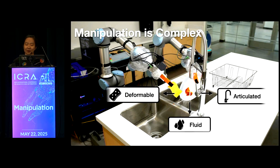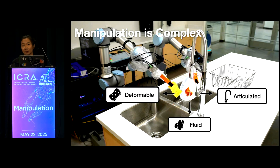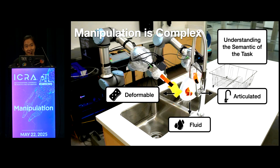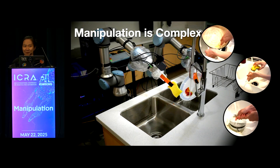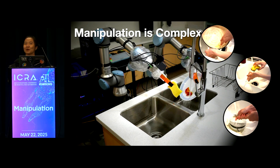I always like to use this example to highlight the complexities of manipulation — for example, the need for the robot to interact with so many complex objects, from deformables to liquids, and also the need to understand the high-level semantics of the task, such as what do you mean by 'clean' and when to stop cleaning. This example barely scratches the surface, and if you remember how you wash dishes at night, you can probably think of many more strategies.